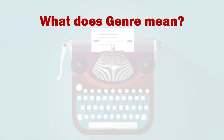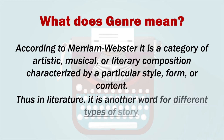What does genre mean? According to Merriam-Webster, it is a category of artistic, musical, or literary composition characterized by a particular style, form, or content. Thus in literature it is another word for different types of story.